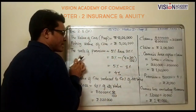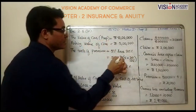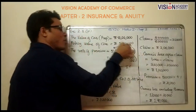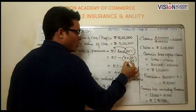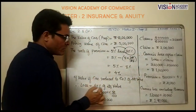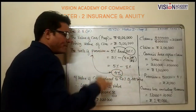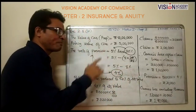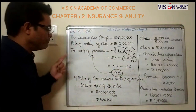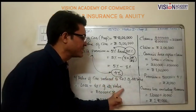The rate of premium is 5 percent less 20 percent. We subtract 20 percent of 5: 20 percent of 5 is 1 percent, and 5 percent minus 1 percent comes to 4 percent. So the rate of premium is 4 percent.